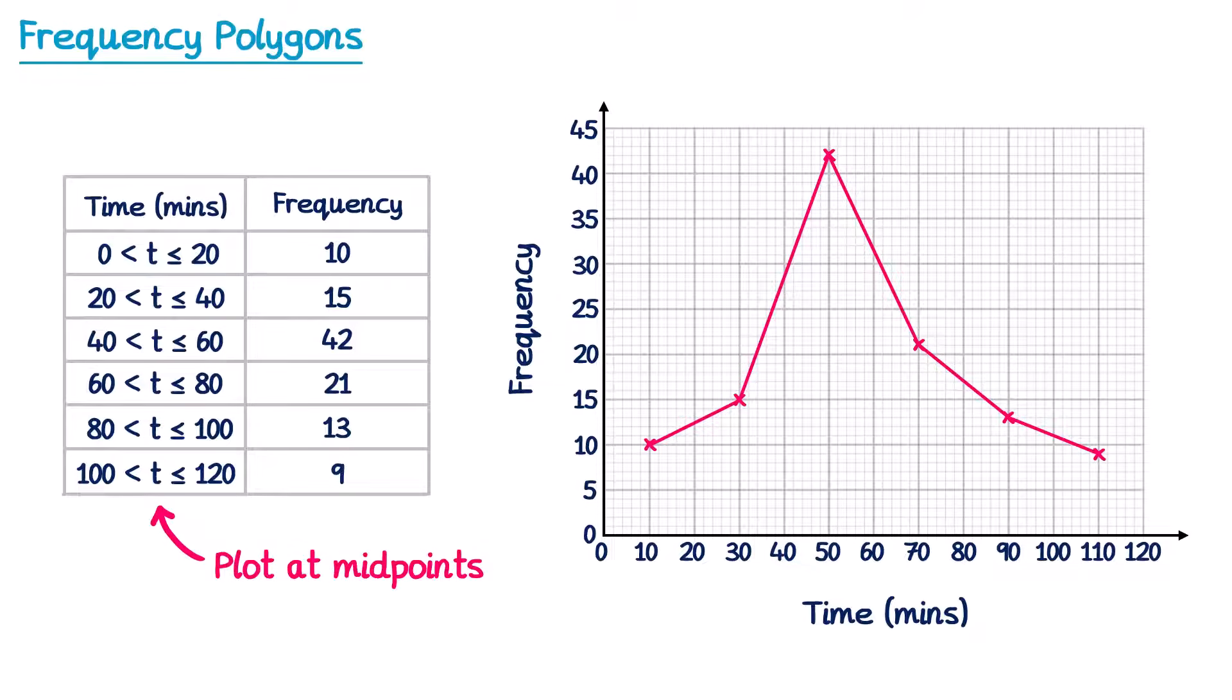It's fairly common for some people to incorrectly join these up to the axis. For example, they'll draw a line here and here. You don't want to draw those lines, the frequency polygon should be floating above the axis like this.